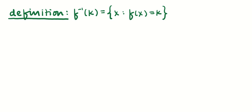So the definition that we're going to take in this class is that the inverse image of a value, f inverse of k, is equal to the set of all x's for which f(x) equals k.